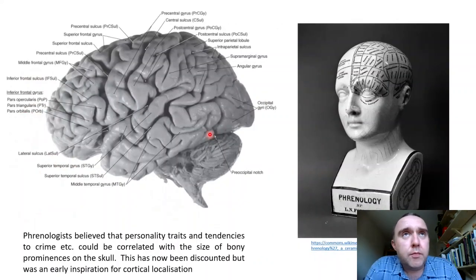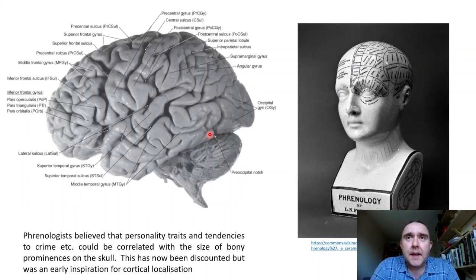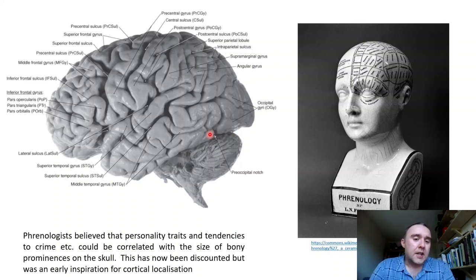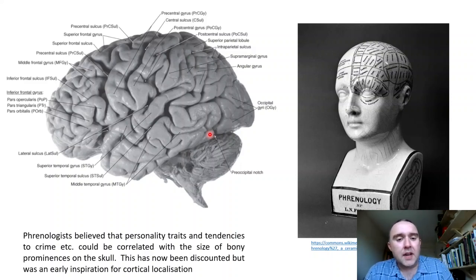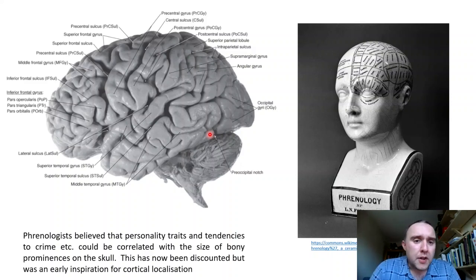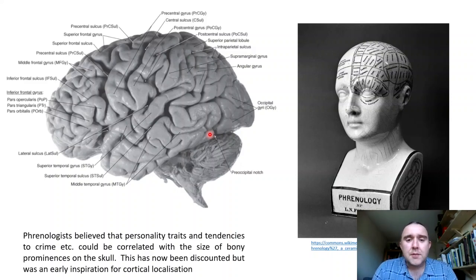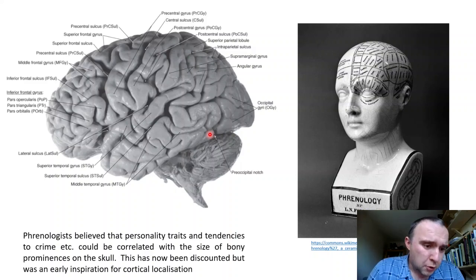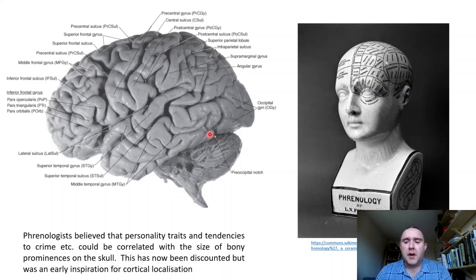You might be forgiven for thinking that the cortex is homogeneous — that it has the same six layers throughout, that they're the same thickness, and that the various regions do pretty much the same thing. However, we know that that is not true. The first hint that this might be the case came from a group of people whose conclusions have actually now been discredited, but who were working along the right lines.